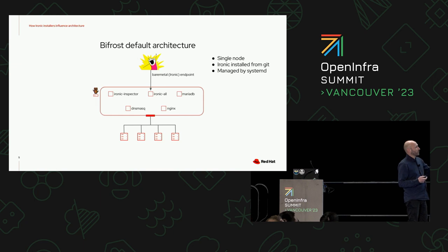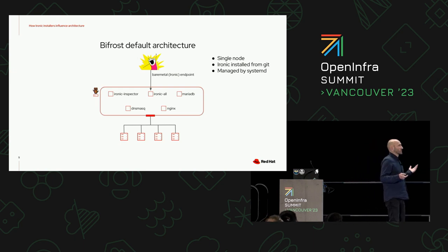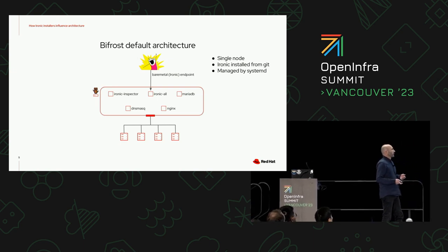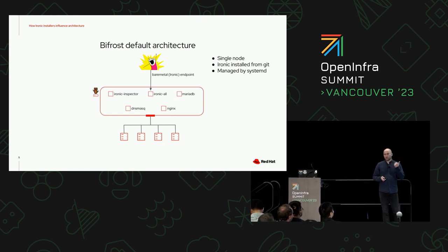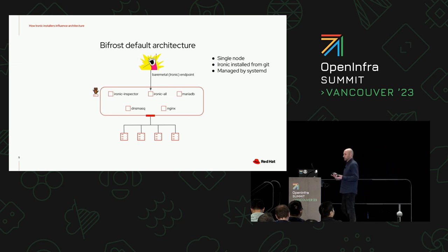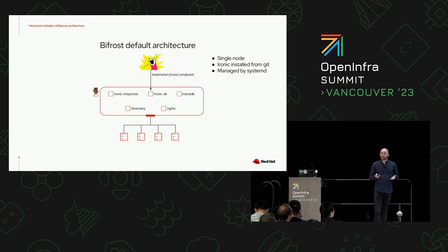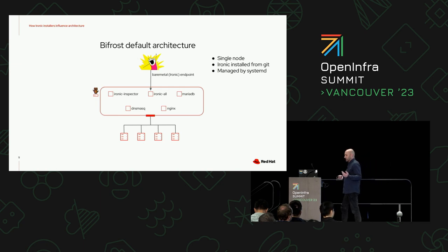Notable things to look at: we have one ironic-all service, which is a combination of the API and the conductor. We are in the process of merging inspector back into the Ironic code base, so in the future that will disappear as well. dnsmasq serves the purpose of both DHCP and TFTP, nginx for HTTP transfers, and MariaDB for storage. Overall, these services are all managed by systemd. At the bottom, there's a provisioning network interface attached to the bare metal nodes on the same Layer 2 network — we'll be coming back to that situation quite a lot in this talk.